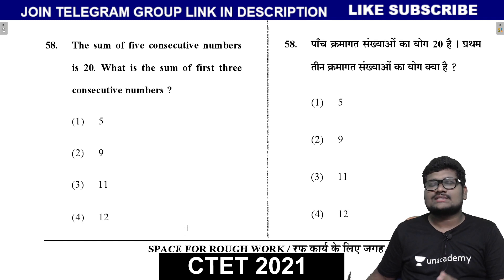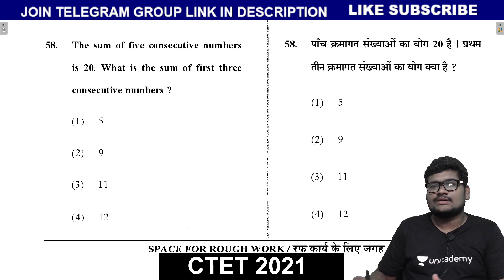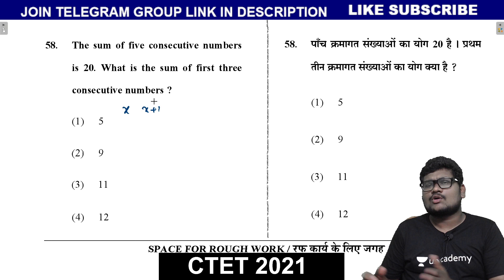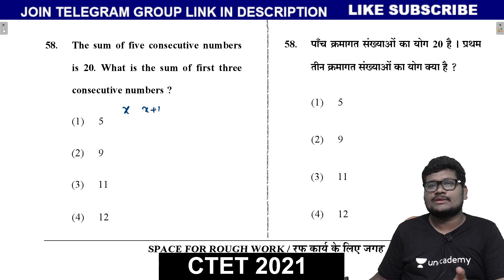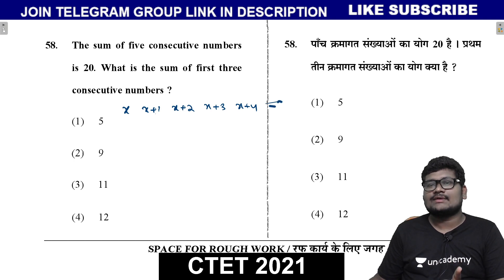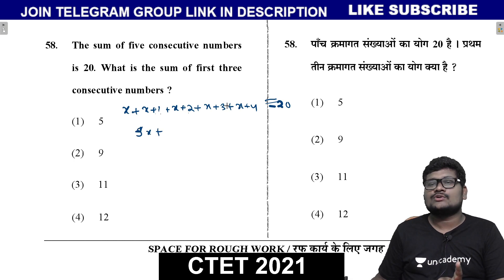The sum of five consecutive numbers is 20 — what is the sum of the first three consecutive numbers? For five consecutive numbers, let the first number be x. The numbers are x, x+1, x+2, x+3, x+4. We add all five: x + x+1 + x+2 + x+3 + x+4 = 5x + 10 = 20.